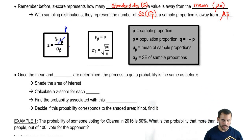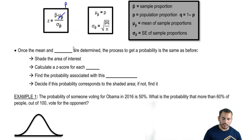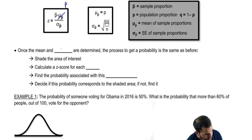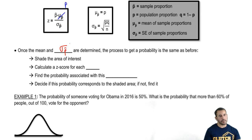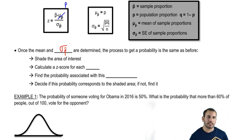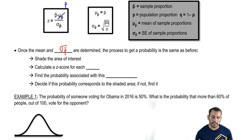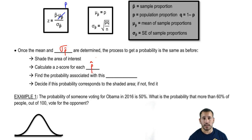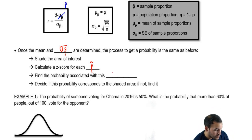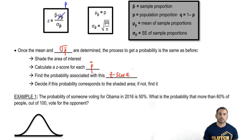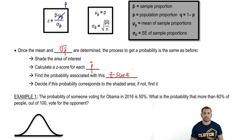Once the mean and standard error are determined, the process to get a probability is the same as before. Once you get a Z-score, it's exactly the same: shade the area of interest, calculate a Z-score for each sample proportion instead of sample mean, find the probability associated with that Z-score, and then decide if the probability corresponds to the shaded area — and if it doesn't, find it.